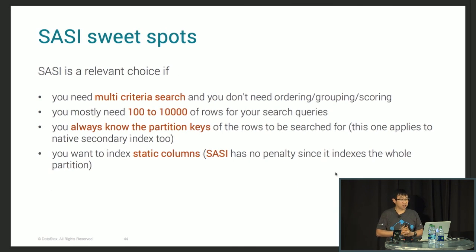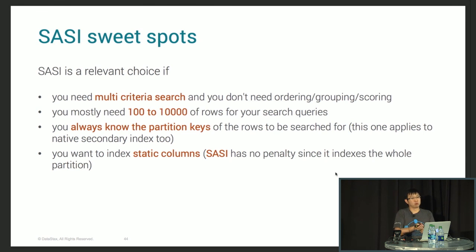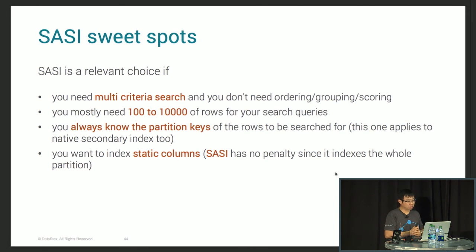Sweet spots for SASI: you need multi-criteria search and don't need ordering, grouping, or scoring; you're fetching 100 to 1 million rows maximum; you always know the partition key — this restricts the query to a single node; and you want to index static columns, since SASI has no penalty there as the static column addresses the whole partition.